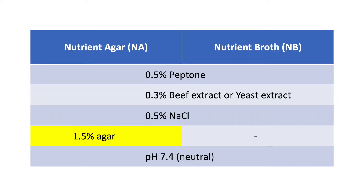Nutrient agar and nutrient broth are general purpose media used for the cultivation of a wide array of microorganisms with no strict requirements for growth. It is mainly composed of 0.5% peptone, an enzymatic digest of animal protein which is the main source of organic nitrogen or amino acids, and 0.3% beef extract or yeast extract, which is the primary source of carbon essential for carbohydrate synthesis. It is also the source of vitamins, trace minerals, and other organic compounds.